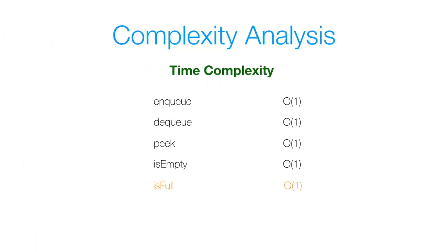Now let's look at the complexity analysis. For time complexity, enqueue and dequeue both use a constant number of operations independent of the size of the array, so they are O(1). Peek, isEmpty, and isFull also each use a constant number of operations, making them O(1) as well. For space complexity, all five methods use a constant amount of space. Keep in mind how much space is wasted with a linear queue — we'll see a much better implementation known as a circular queue later on, so definitely stay tuned.